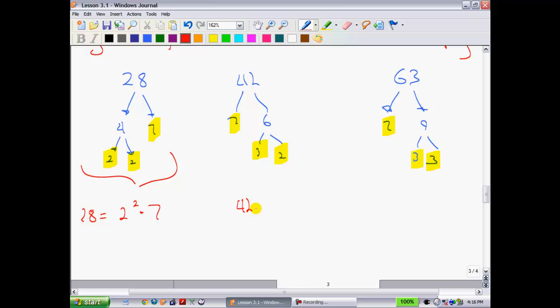This one over here I'm going to write as 42 is equal to 2 times 3 times 7. And 63 is equal to 3 squared times 7.